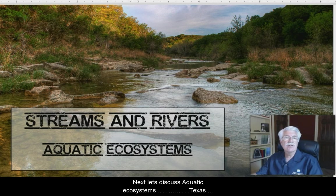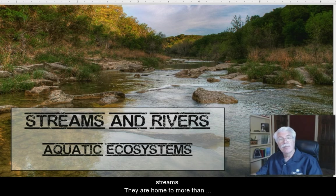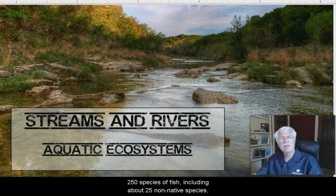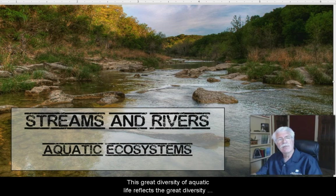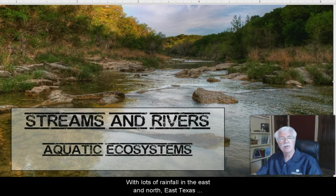Next, let's discuss aquatic ecosystems. Texas ranks second in the United States for biodiversity in its rivers and streams. They're home to more than 250 species of fish, including about 25 non-native species. This great diversity of aquatic life reflects the great diversity of habitats found across Texas' landscape.